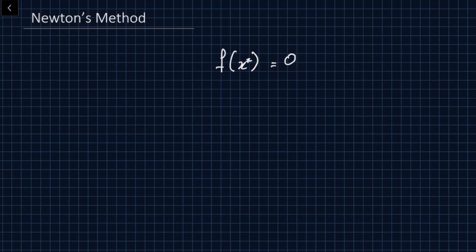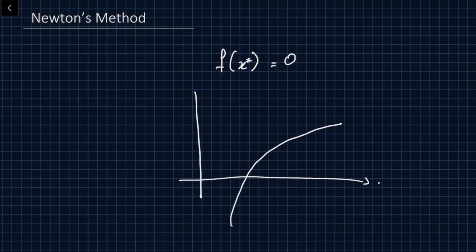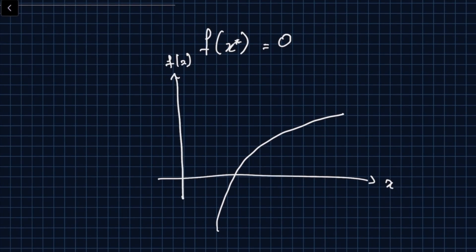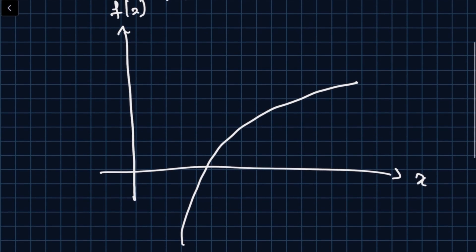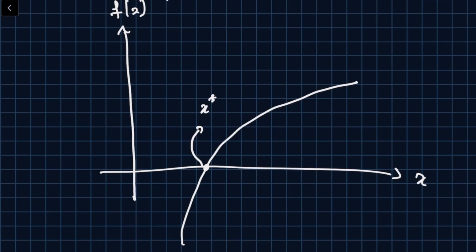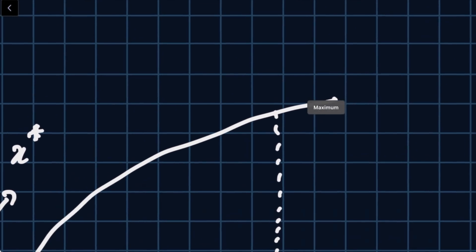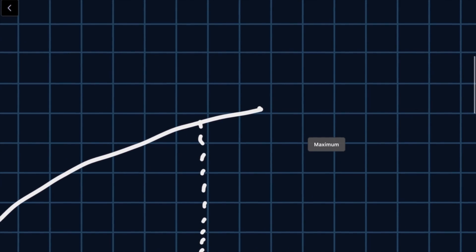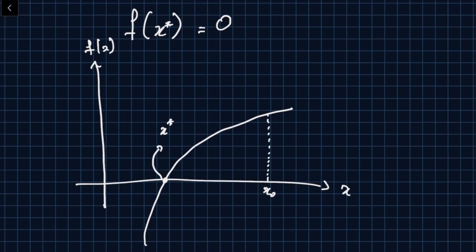Say we have a function plotted as f(x) versus x, with x* marked as the root. Newton says: pick an initial guess x_0. In its local neighborhood, if you zoom in a lot, the function actually looks like a straight line. So Newton does a local linear approximation to f at the current point x_0.